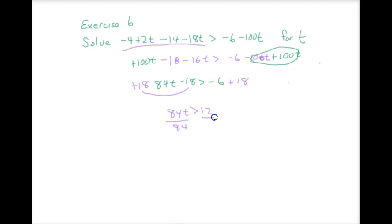So I'm sitting here hoping that 84 and 12... 12 does go into 84. If I write 84, it goes in 7 times. So t is greater than 1 over 7. So what we're hoping is when we do this problem a second time that we're going to get the same answer.